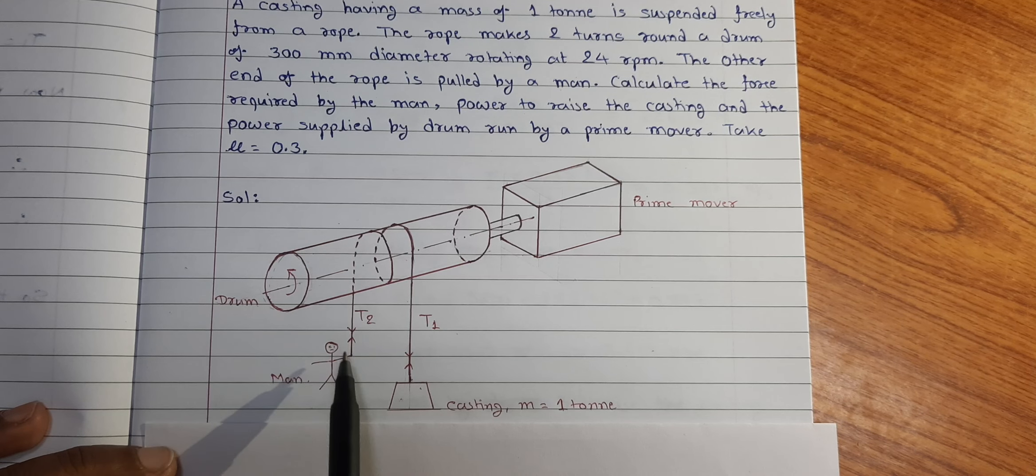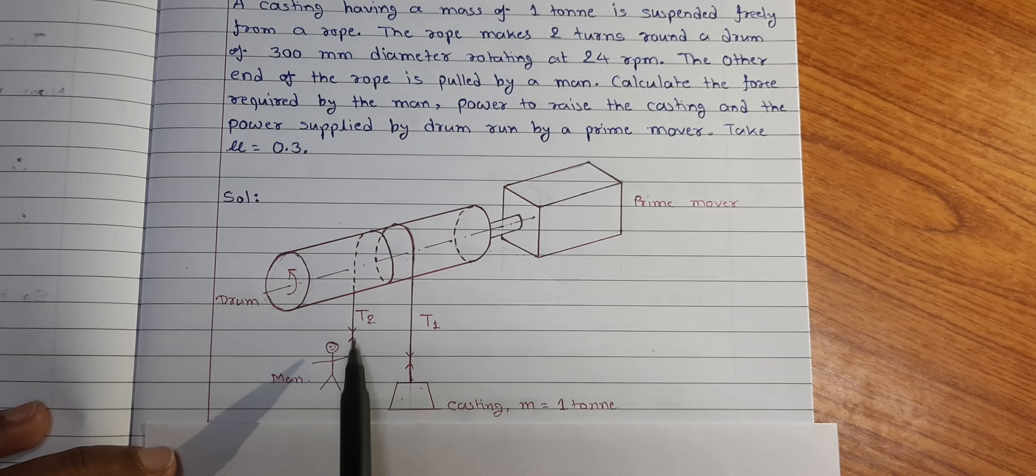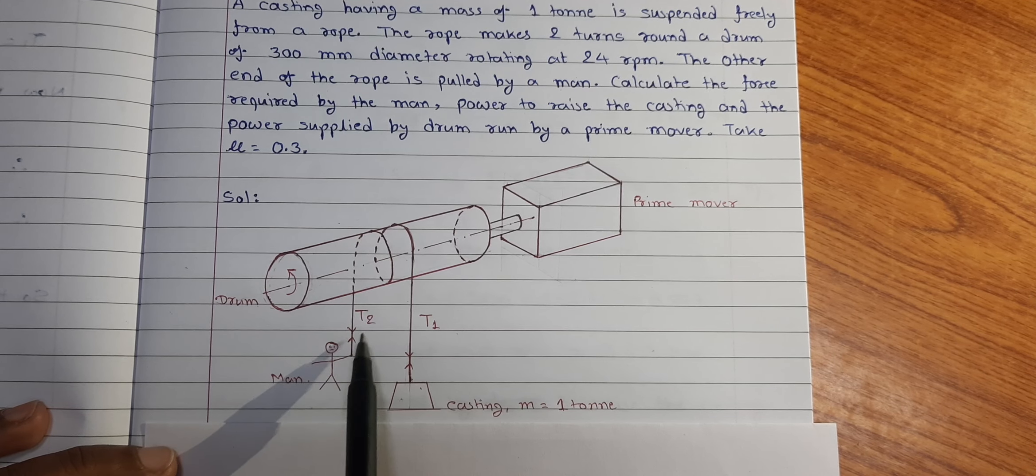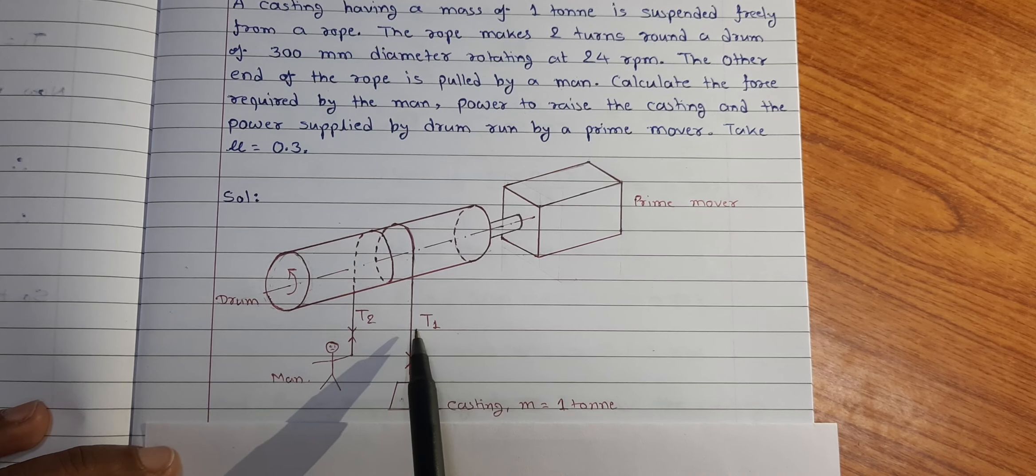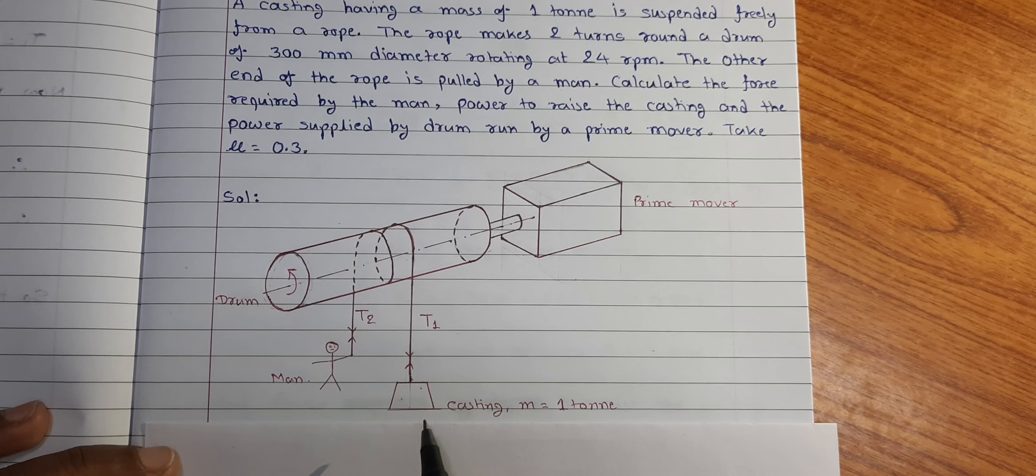And another end is pulled by the man, so it will be a slack side with tension T2 and tight side having the rope tension T1.